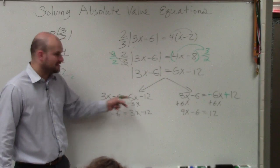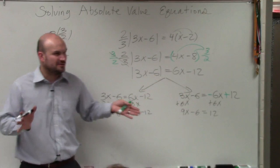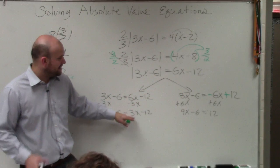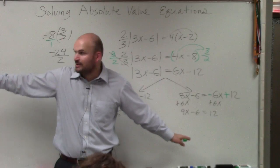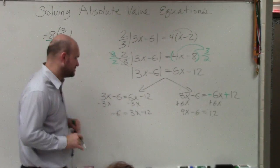Here I decided to subtract the 3x, and here I decided to add 6x. Do you guys see why I decided to do those? Because each of my times, I made the variable positive. That's what I'm talking about when I talk about make the variable positive. It's not necessary. You could do it the other way, but it's just my preferred method.